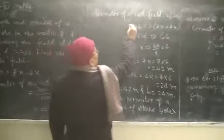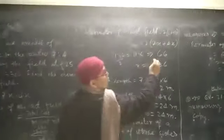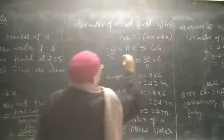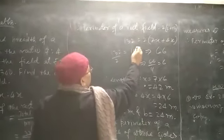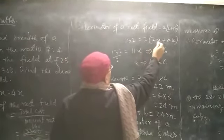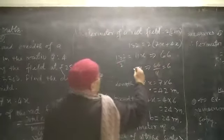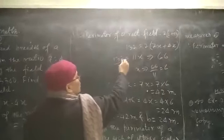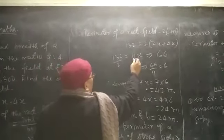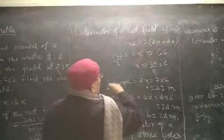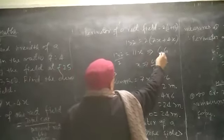Therefore, perimeter of rectangular field is equal to 2 times length plus breadth. Therefore, 132 is equal to 2 into 7x plus 4x. It will be equal to 132 divided by 2 will be equal to 11x, and it will be equal to 66.